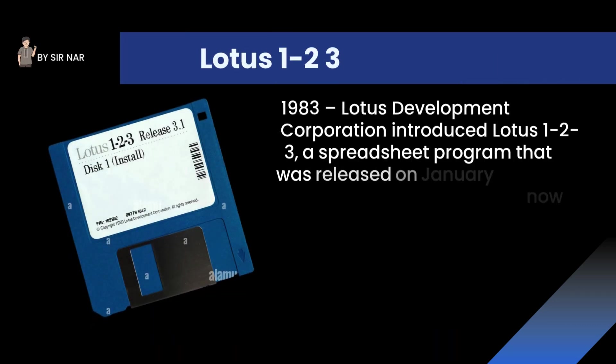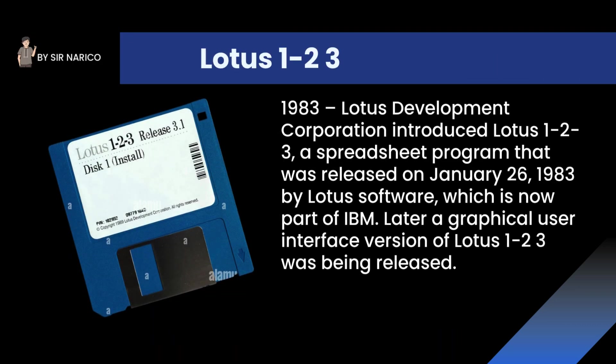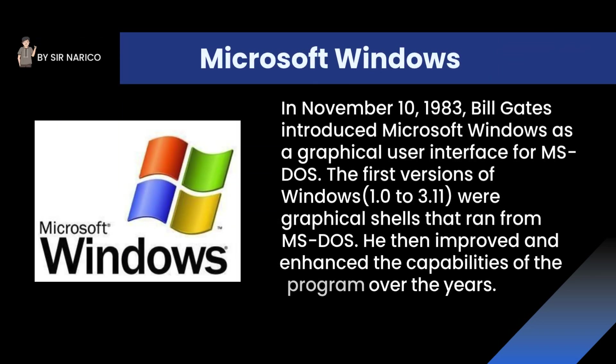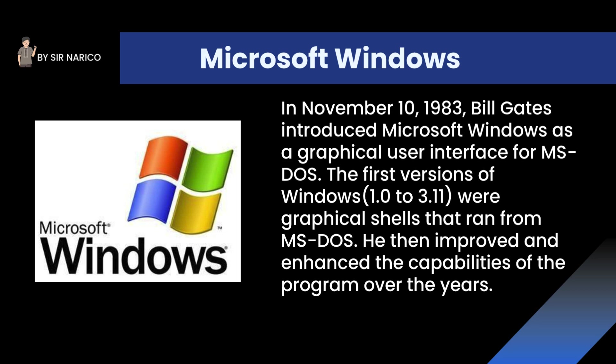In 1983, Lotus Development Corporation introduced Lotus 1-2-3, a spreadsheet program released on January 26, 1983 by Lotus Software, which is now part of IBM. Later, a graphical user interface version of Lotus 1-2-3 was also released. On November 10, 1983, Bill Gates introduced Microsoft Windows as a graphical user interface for MS-DOS. The first versions of Windows — 1.0 to 3.11 — were graphical shells that ran from MS-DOS.